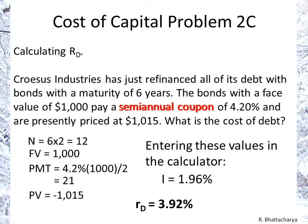Then all you do is enter the values in the calculator and you will get an answer of I equals 1.96%. Keep in mind that this yield of 1.96% is the semi-annual yield because the payments and periods are semi-annual. You have to multiply that by two and then you get the required return on this debt, which is 3.92%. That's all there is.